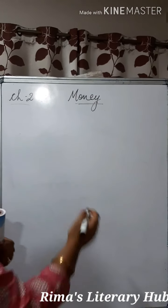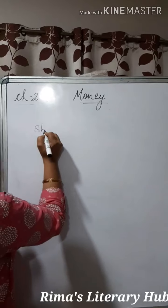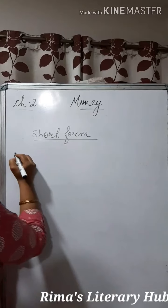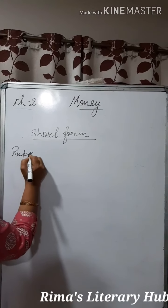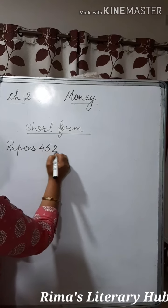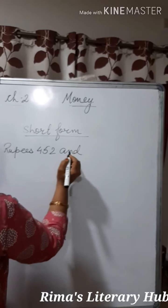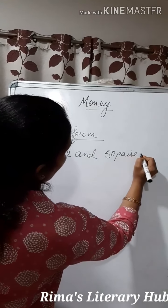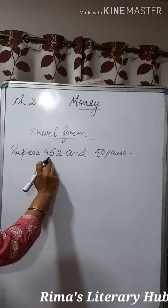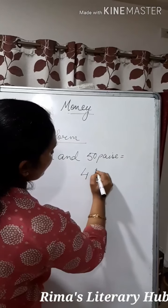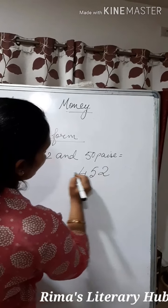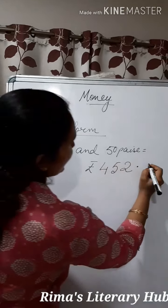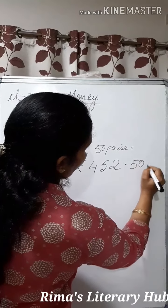Let's take one more example. How will you write this in short form? 452 rupees and 50 paise. We can write it with the rupee sign as 452, then a point to separate rupee from the paise, followed by 50 paise.